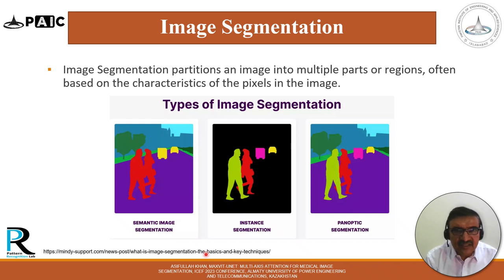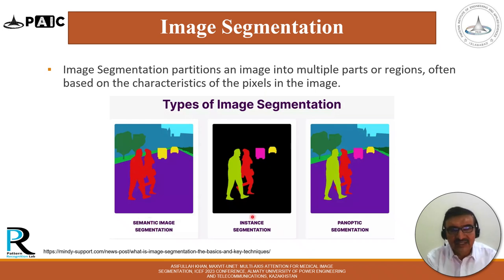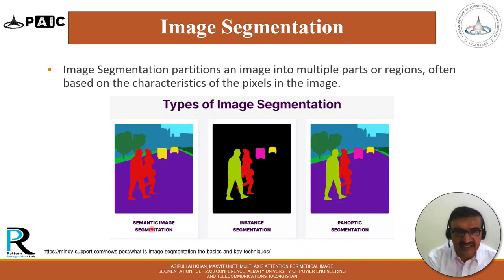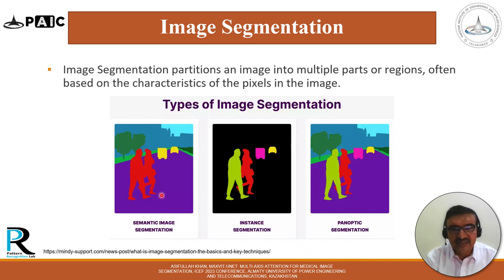Image segmentation partitions an image into multiple parts or regions, often based on the characteristics of the pixels. There are three types: semantic image segmentation, which we are focusing on; instance segmentation, where even different examples of the same class are differentiated — for example, two humans are differentiated, while in semantic segmentation they are classified into a single class; and panoptic segmentation, where importance is also given to background information.